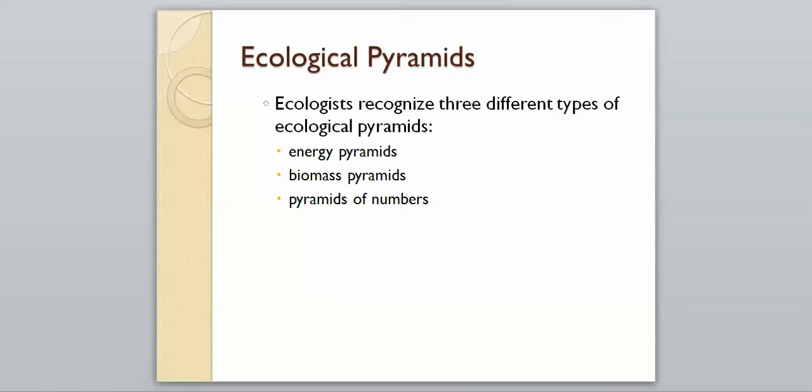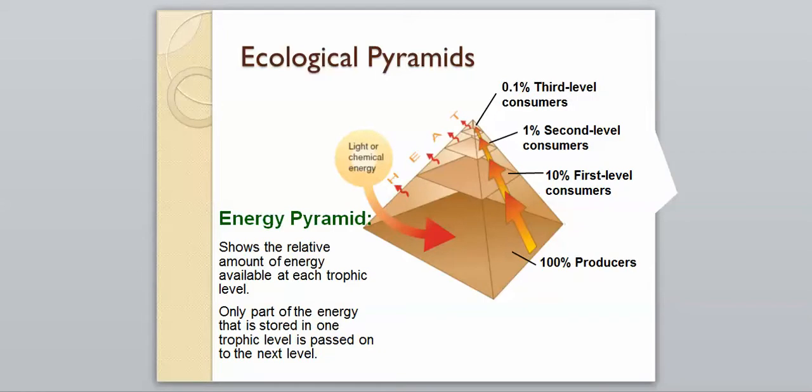The first one is an energy pyramid, which shows the relative amount of energy available at each trophic level. Only part of the energy that is stored in one trophic level is passed on to the next. We have 100% of our energy at the bottom. The bottom is the grass. The grasshoppers eat the grass and only take 10% of that energy from the grass. Then the mouse eats the grasshopper, and only 10% of that energy, so 1% of our total, makes it up there. If the hawk comes down and eats the mouse, then only 0.1% of our energy is left. It decreases by 10% each time.